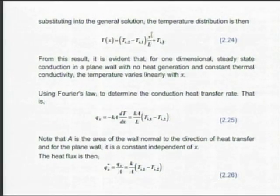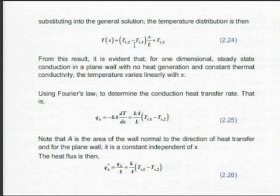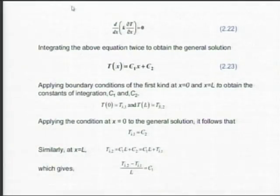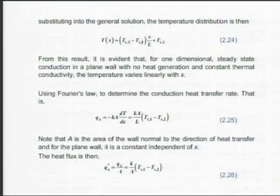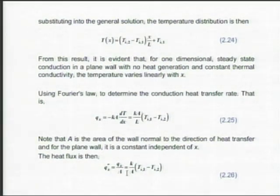When x = 0, the term in the bracket goes to 0, so temperature at x = 0 is T_s1. When x = L, this becomes 1, T_s1 cancels and I am left with T_s2. So it satisfies the boundary conditions correctly. The first derivative gives dT/dx = C₁. That functional form — C₁ — is what comes in the heat flux term. Heat flux is q'' = -k(dT/dx), which comes out to equation 2.26.